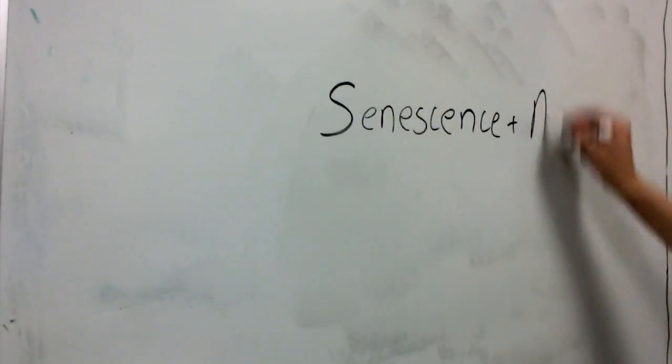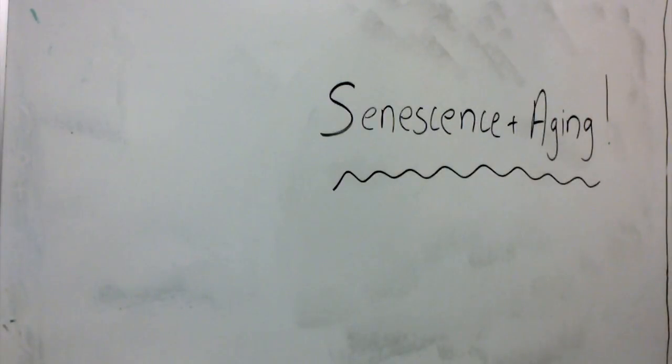In terms of how this relates to our theories of aging and senescence, we have the disposable soma theory where our somatic tissues sustain a lot of damage to conserve energy in order for our germline to prosper, which results in the aging of our somatic cells. We also have the mutational accumulation theory where late-acting deleterious mutations accumulate in a population over evolutionary time, leading to senescence.